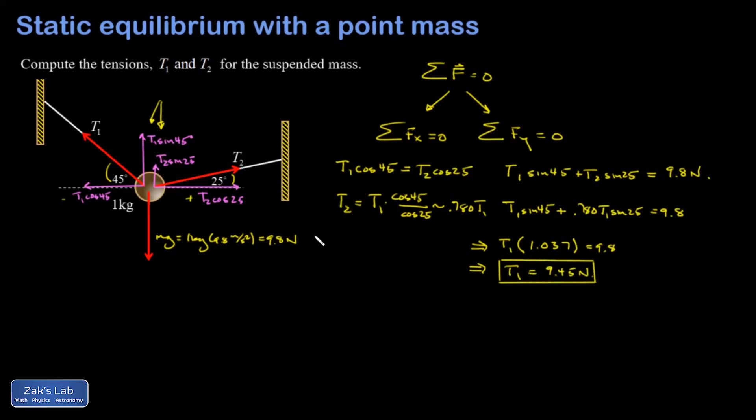Then I go back to my original substitution and I can quickly get T2. So T2 is 0.780 T1. Plug in T1: 0.780 times 9.45, and I find out that T2 is equal to 7.37 newtons.